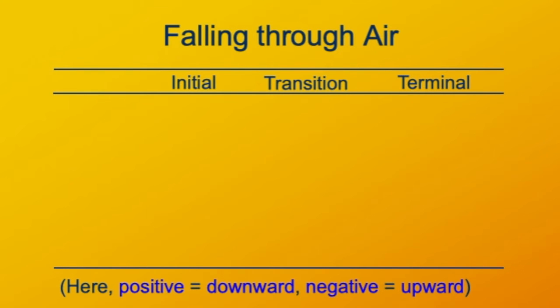So we'll describe three basic phases in the motion of this dropped object. First, immediately after it's released. Second, as it is speeding up to terminal velocity. And third, when it is at terminal velocity.